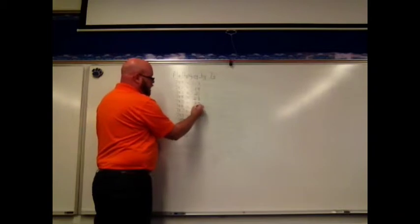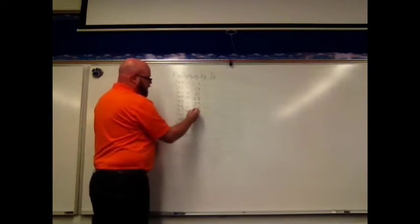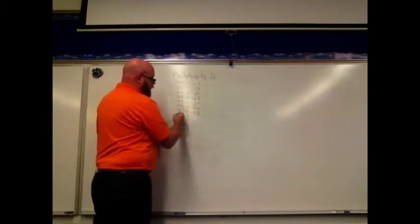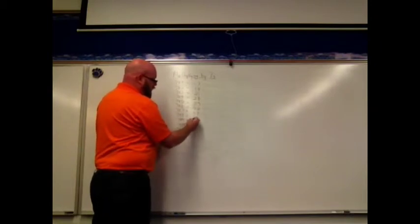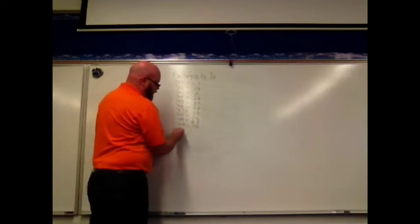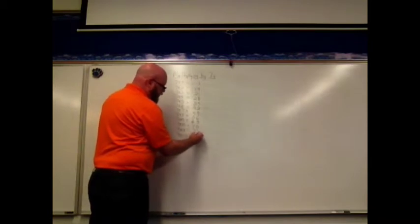Seven times six is 42. Seven times seven is 49. Seven times eight is 56. Seven times nine is 63. Seven times ten is 70. Seven times eleven is 77. Seven times twelve is 84.